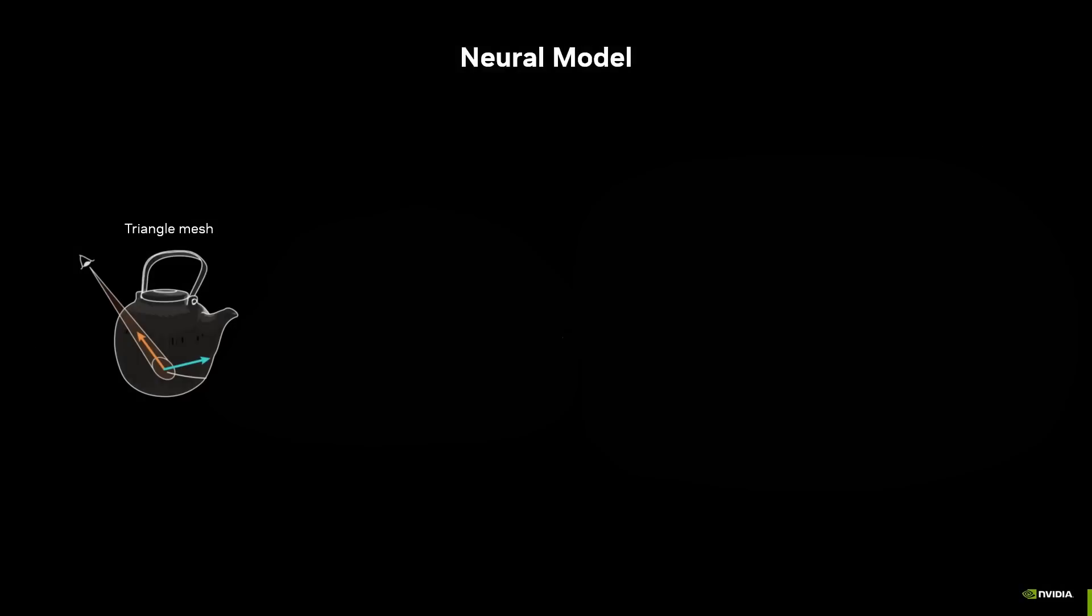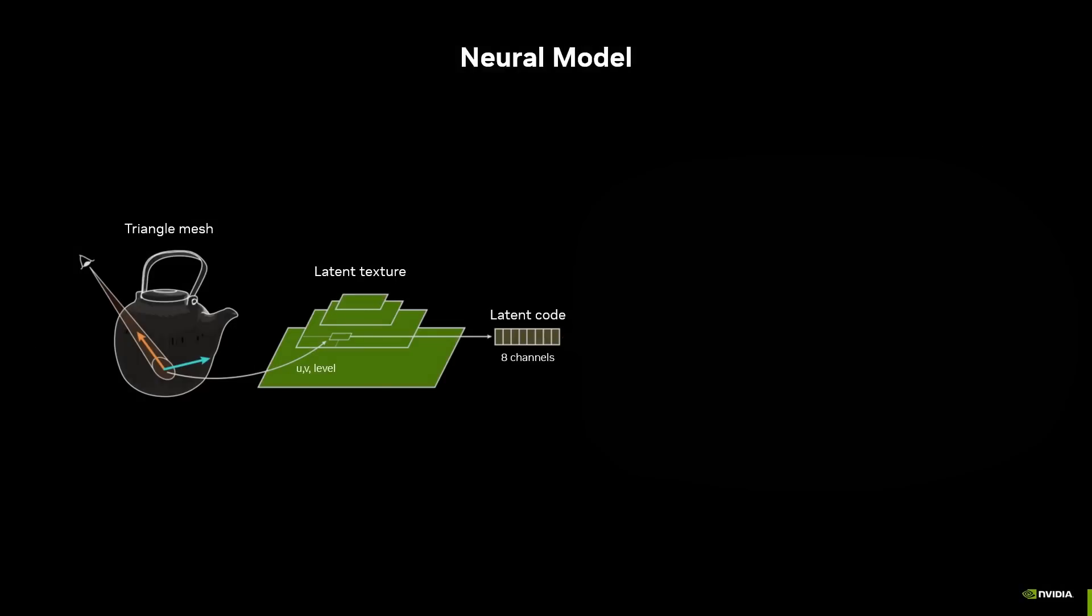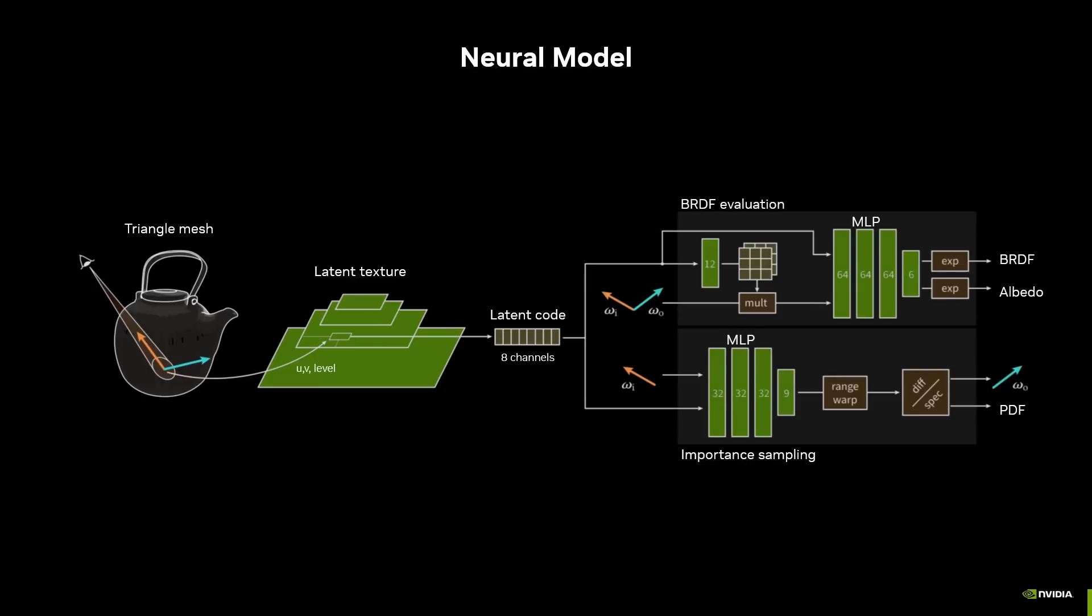At render time, using a neural material is a lot like using a traditional material. At each hit point, we look up the latent texture and evaluate two MLPs, one to get the BRDF value, and a second one to importance sample the outgoing direction.